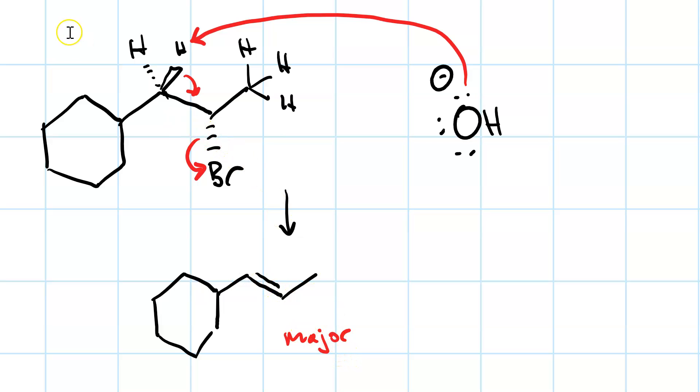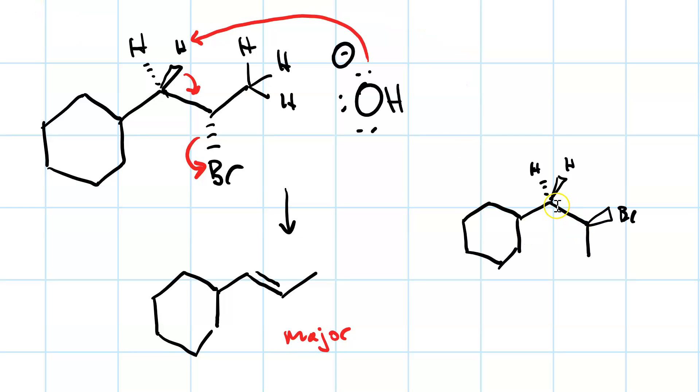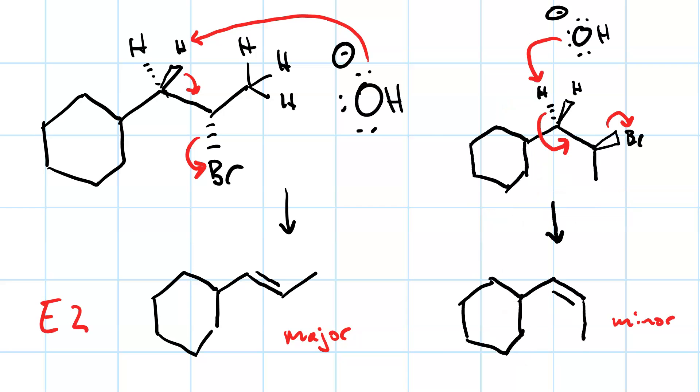However, if we started out with the initial rotational configuration, then our hydroxide would attack the other beta proton. And so we will also get some cis product. So our major E2 product is the trans alkene. Our minor E2 product is the cis alkene. Both are Zaitsev because hydroxide is a non-bulky base.